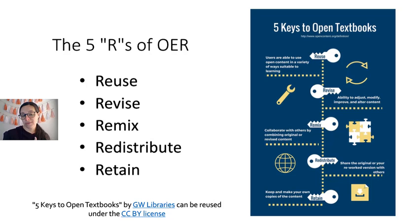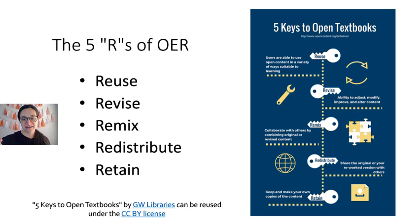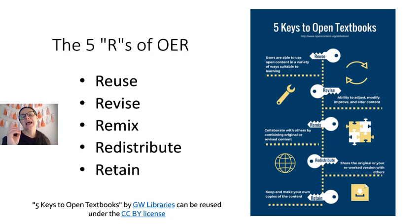As we saw with Creative Commons licenses, some openly licensed materials do not allow all of these options. Licenses that include ND — non-derivative — mean you cannot revise, remix, or redistribute. So you have to be careful with how you're using materials and, when creating content, how you're licensing it to ensure it can be used the way you intend. Keep the licenses and the ability to exercise the five R's in mind for any specific content.